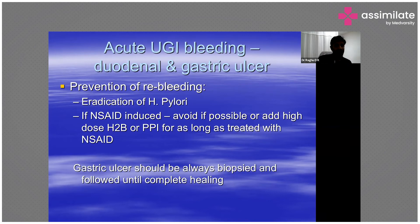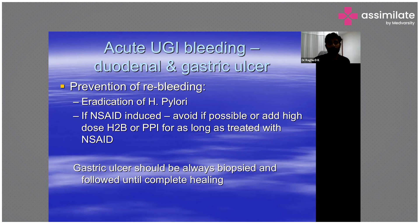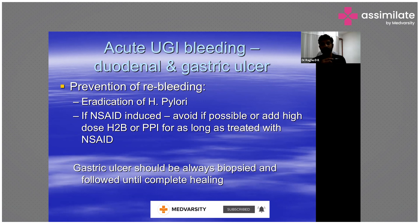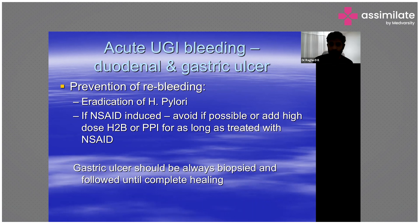To prevent re-bleeding: eradicate H. pylori if present. If NSAID-induced, avoid NSAIDs if possible, or add high-dose H2 blockers such as famotidine or ranitidine, or a PPI for as long as the patient is on NSAIDs, as they are at very high risk of bleeding. Importantly, all gastric ulcers should always be biopsied and require a relook endoscopy, because gastric ulcers can sometimes be caused by malignancy — not just stress, hyperacidity, or NSAIDs.